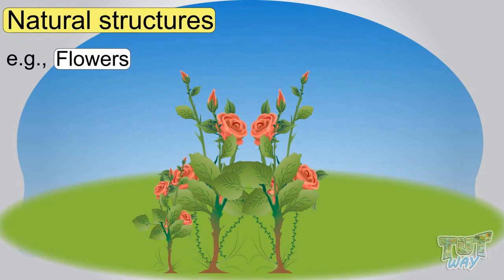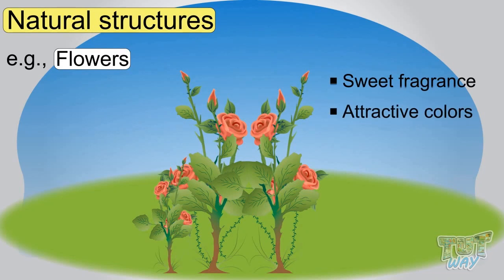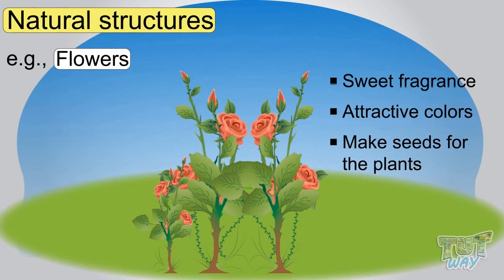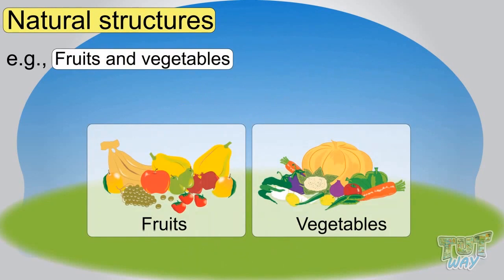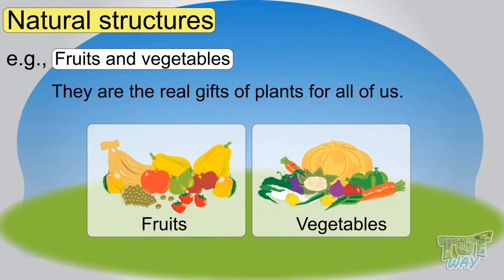Flowers are a beautiful natural structure. They have sweet fragrance and attractive colors. They make seeds for the plants. Fruits and vegetables are natural structures we eat — they are real gifts of plants for all of us.